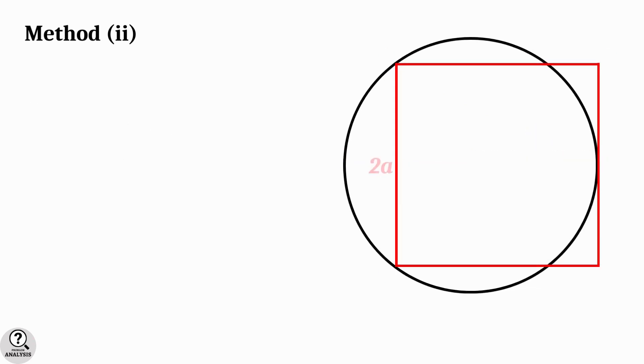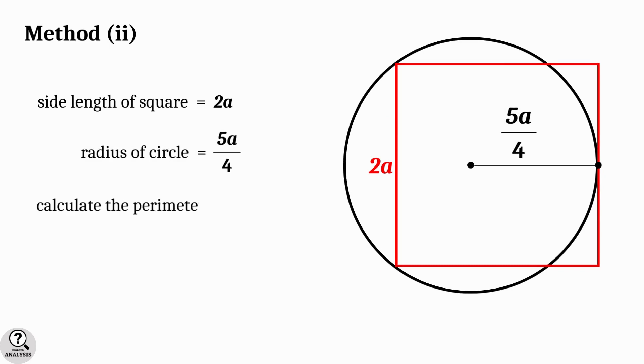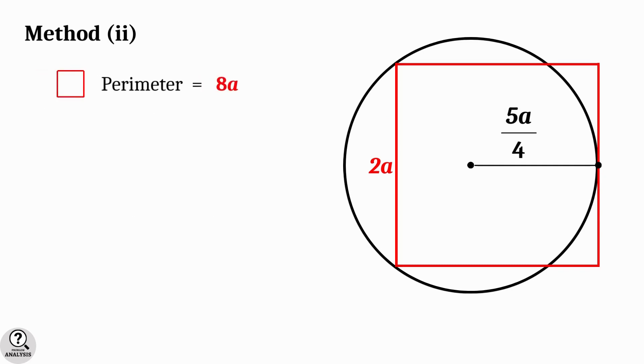So here also, side length of the square is 2a and radius of the circle is 5a by 4. Calculating the perimeters, we get perimeter of the square is 8a units and perimeter of the circle is approximately 7.854a units.